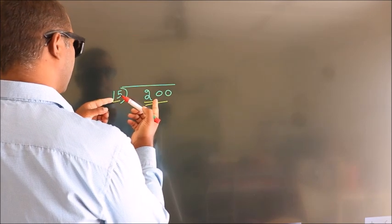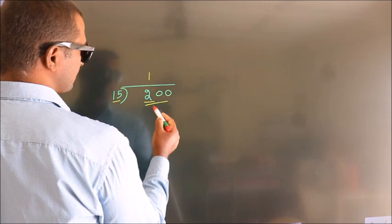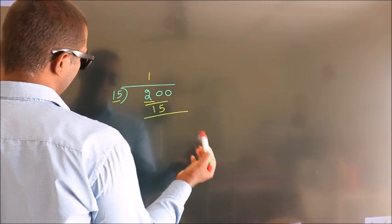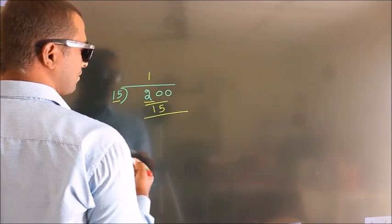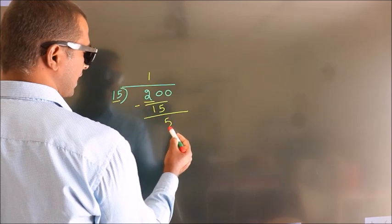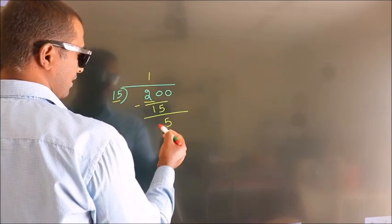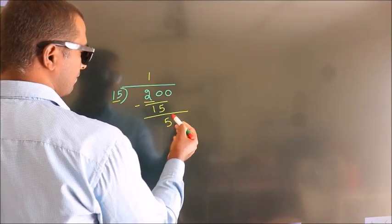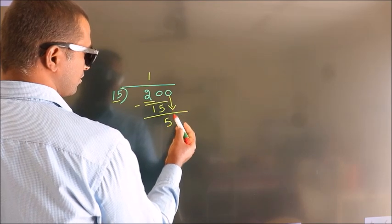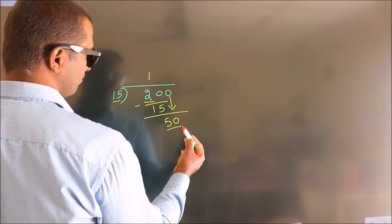In the 15 table, 15 once is 15. Now we should subtract — we get 5. After this, bring down the beside number, so 0 down. So 50.